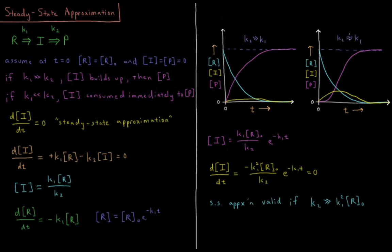Alternatively, if K1 and K2 are competitive, as the reactant decreases and gets consumed, we get a buildup of the intermediate and the product takes some time to be produced as we reach a maximum in intermediate concentration. This is a situation where the steady state approximation is less valid. And as K1 gets bigger and bigger relative to K2, the approximation becomes less and less valid to use.